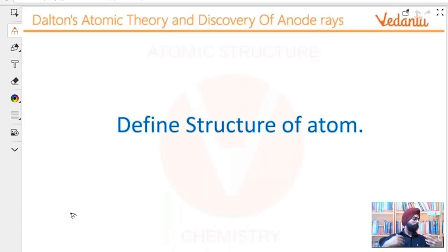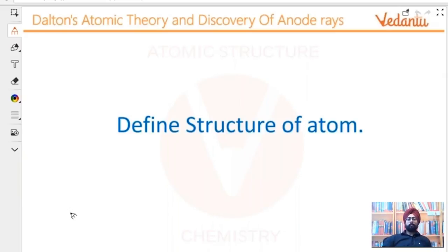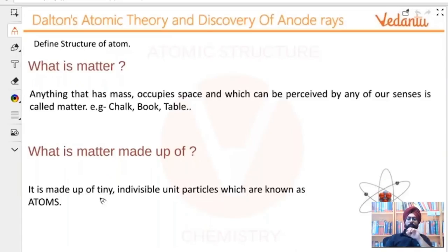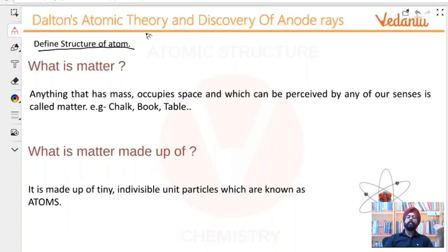Let us begin, talking about the structure of atom. Now, long long back, people actually didn't know what atoms are. So this smart guy, Dalton, came up with the very first theory of atoms. This whole chapter is to go through the pursuit of defining what an atom is, what is the structure of the atom.